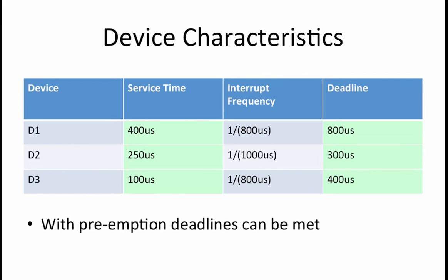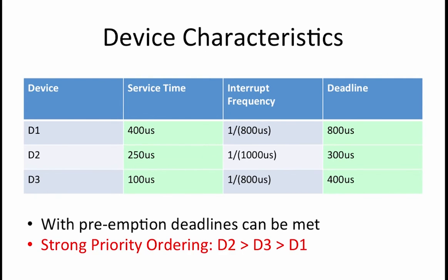In addition, since at the beginning of our problem we determined that there is enough time to service all of our interrupts given their service times and interrupt frequencies, that means that there must exist a strong priority ordering that can satisfy all the constraints of our system. You can use the scheme that a device with a shorter deadline should have a higher priority than one with a longer deadline to arrive at a valid strong priority ordering. A valid strong priority ordering is D2 has the highest priority, then D3, and then D1, or expressed as D2 > D3 > D1.